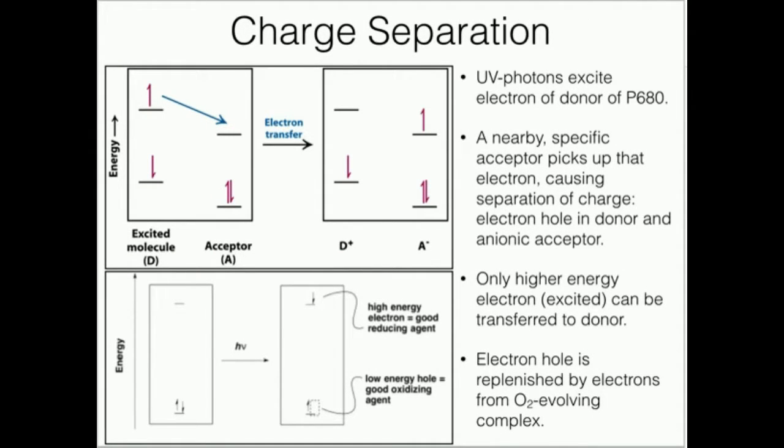That's the D+. It now has an electron hole, and it is a very powerful oxidizing agent. It will take an electron to replace that. And it turns out that it replaces it with electrons from water, a reaction that's catalyzed by that oxygen-evolving complex.